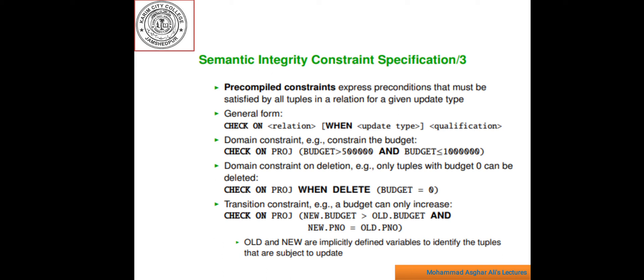The next one is transaction constraint. The budget of a project can only increase. Check on project new dot budget greater than old dot budget and new dot PNO equal to old dot PNO. Old and new are implicitly defined variable to identify the tuples that are subject to update.